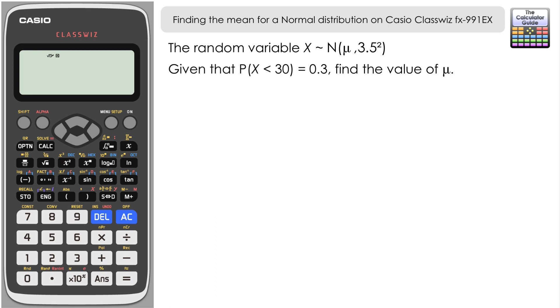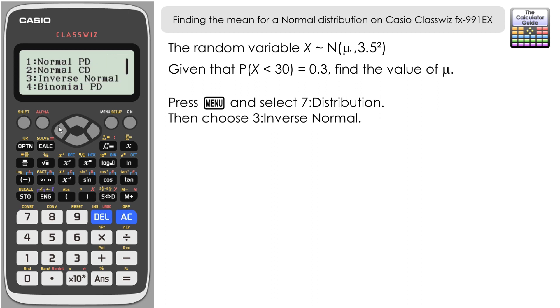We're going to use inverse normal from the Casio ClassWiz to help us answer this question. So it's menu and 7 for distribution and then we want 3 for inverse normal. Now the area that we have here refers to the probability that we're given in the example. So in this case we're going to input 0.3 in as our area.